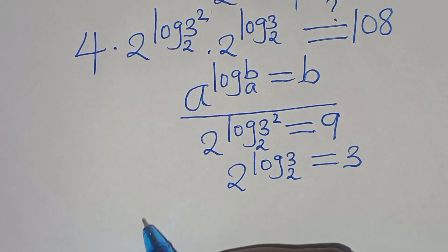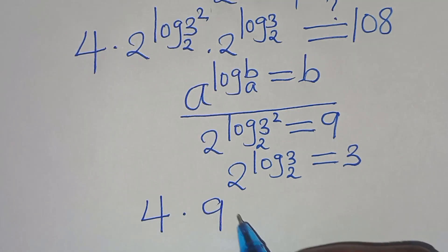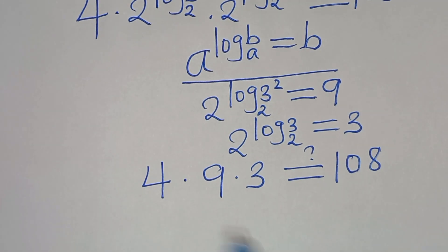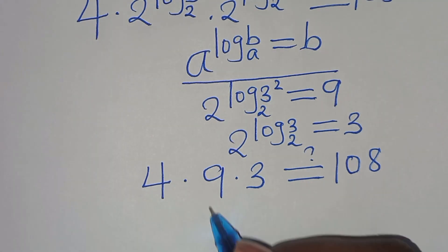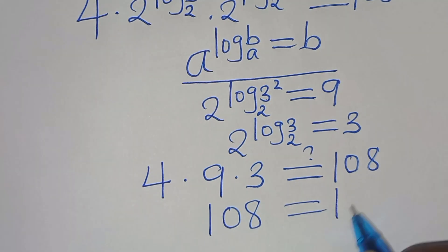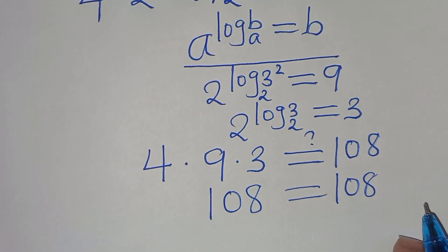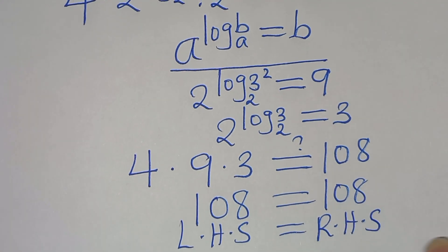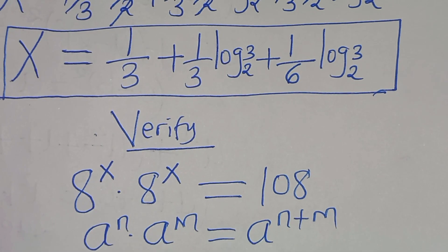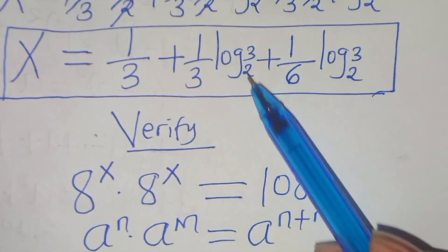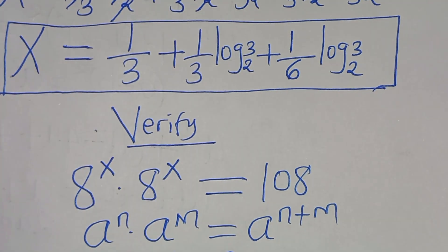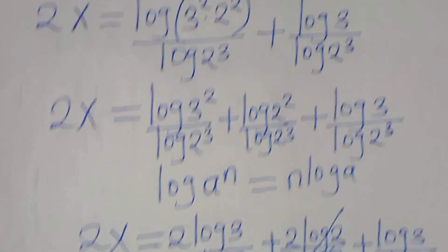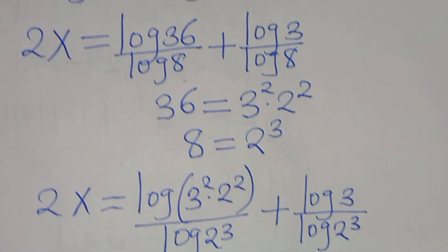Substituting 9 and 3 back into the equation, we have 4 times 9 times 3, which should give us 1/8. So 9 times 4 is 36, times 3 is 108, which equals 1/8. This clearly shows that the left-hand side equals the right-hand side, confirming that x equals 1/3 + (1/3) log₂3 + (1/6) log₂3 satisfies the equation. Kindly follow the steps, like this video, and subscribe. See you in the next video, bye bye for now.